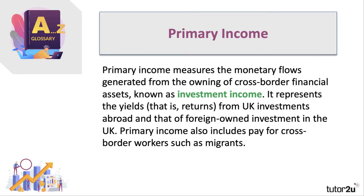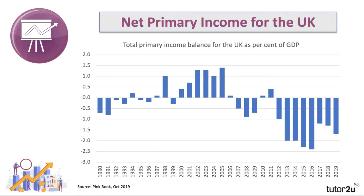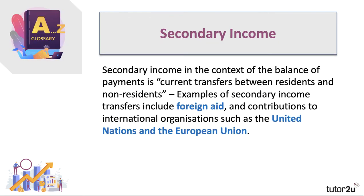Remittances are a significant primary income flow affecting both gross national income per capita and a country's current account balance. Looking at the UK figure, there has been a turnaround — the UK now runs a deficit on net primary income, meaning more money is flowing out from foreign investment in the UK than comes back from our overseas assets. For several years previously the UK ran a small primary income surplus.